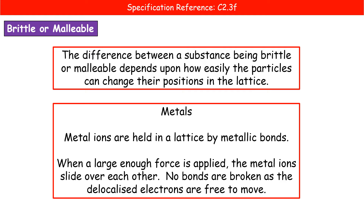The second property we're going to consider is whether something is brittle or malleable. Brittle means that it just snaps. Malleable means that you can change its shape through bending, for example. The difference comes down to how easily the particles can change their positions within the lattice structure. If they can change places very easily they're going to be malleable; if they can't change places easily it's going to be brittle.